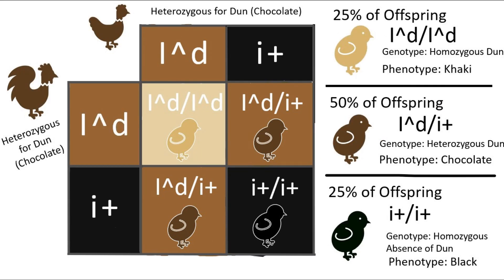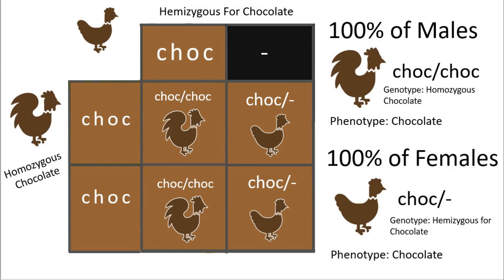The fourth pairing is a heterozygous Dunn bird bred to a heterozygous Dunn, meaning this pairing is the equivalent of breeding two chocolates together. This pairing should give you the widest variety of offspring, with 25% black offspring, 50% heterozygous Dunn or chocolate, and 25% homozygous Dunn or khaki offspring. If you are working with a breed like Silkies or Seramas and are unsure if you are working with Dunn-based chocolate or sex-linked chocolate and try this pairing, if you hatch a large number of offspring and all of them are chocolate, there's a good chance you might be working with sex-linked chocolate instead.